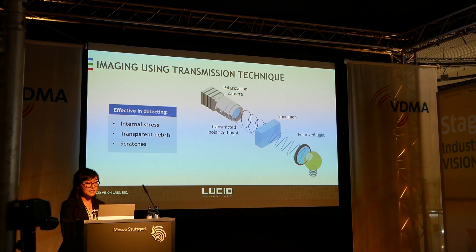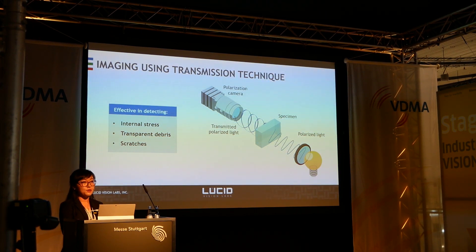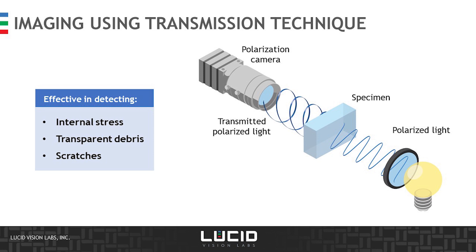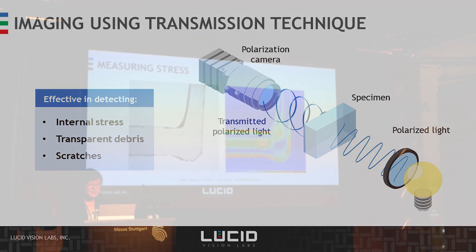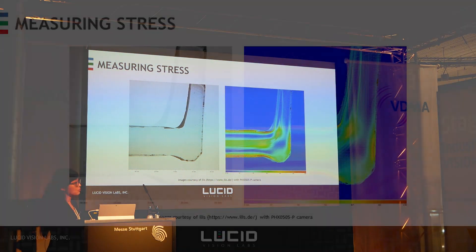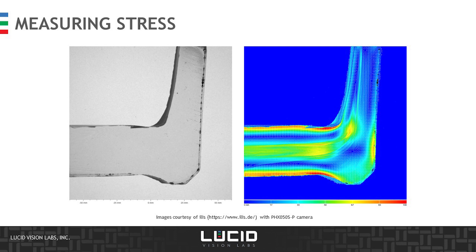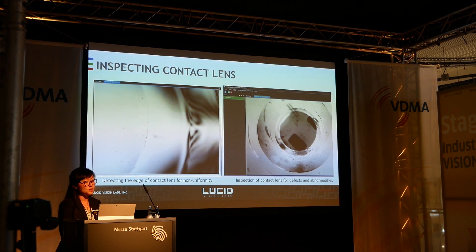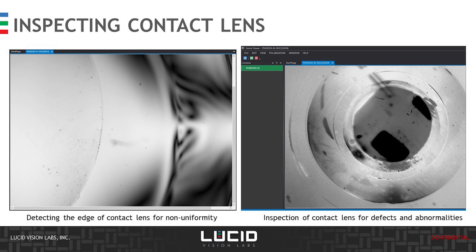The third technique is the transmission technique, where polarized light passes through the material itself and the camera looks at the image on the other side. It's effective in detecting internal stress in transparent objects and scratches. This is an example of looking at a transparent glass tumbler and detecting internal stress information — the regular monochrome image on the left shows very little, while the false color polarization image on the right reveals high-stress hot points. We've also encountered customers using polarization light to inspect contact lenses, inspecting the quality of the contact lens edge or any scratches or foreign objects in the solution.